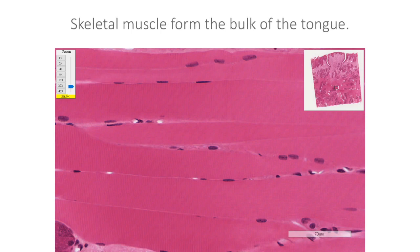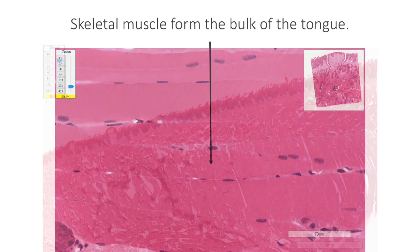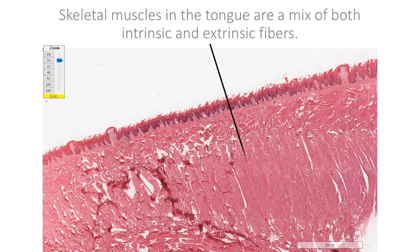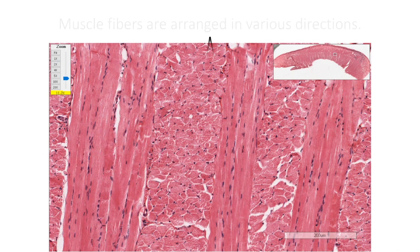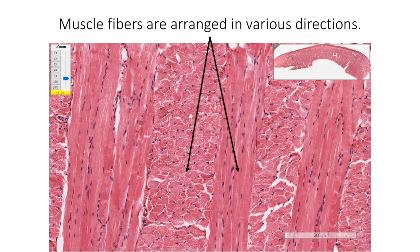Skeletal muscle forms the bulk of the tongue. Both intrinsic and extrinsic types of fibers are found — intrinsic fibers beginning and ending within the tongue, whereas extrinsic fibers begin somewhere else and end in the tongue. Skeletal muscle fibers are arranged in various directions; typically, intrinsic muscle fibers are arranged as vertical fiber bundles, transverse fiber bundles, as well as anteroposterior fiber bundles.